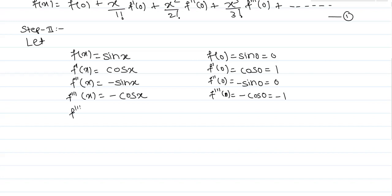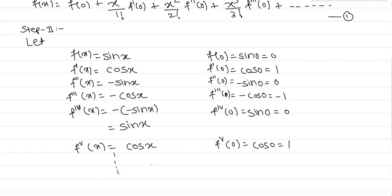The fourth derivative is -(-sin x) = sin x, which means the fourth derivative at zero is sin 0 = 0. Substituting these values in equation 1 we get...